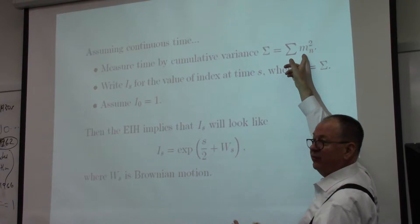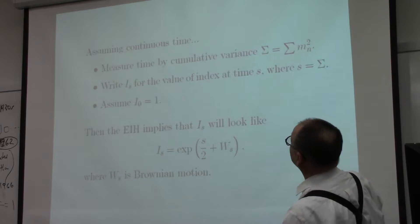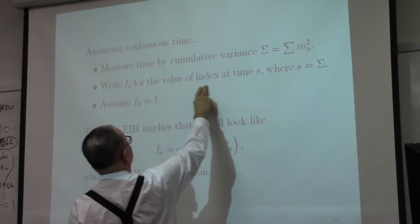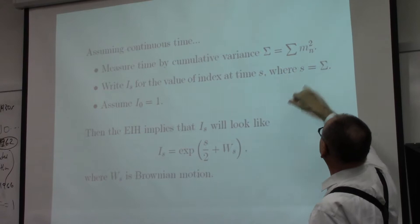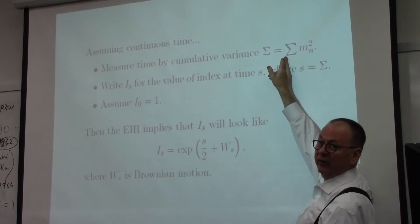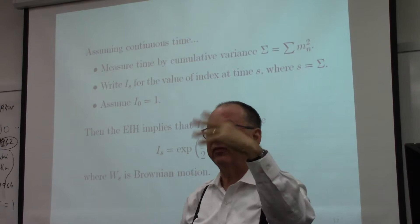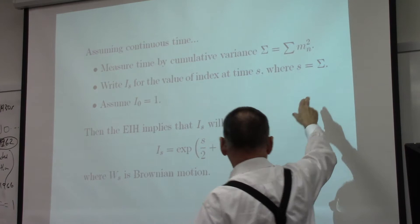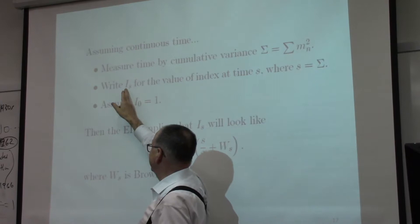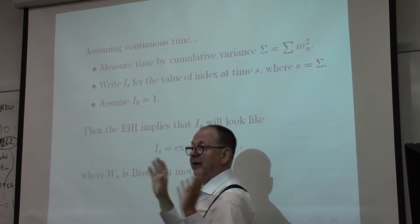We're going to measure time by the cumulative variance — think about these returns as infinitesimals. I write I_s for the value of the index at time s, where s is measured in elapsed variation, not in clock time. I assume that at time zero, the index's value is one — like taking the speed of light as one. The accumulated variance, or sigma, is measured by the actual accumulated squared changes.